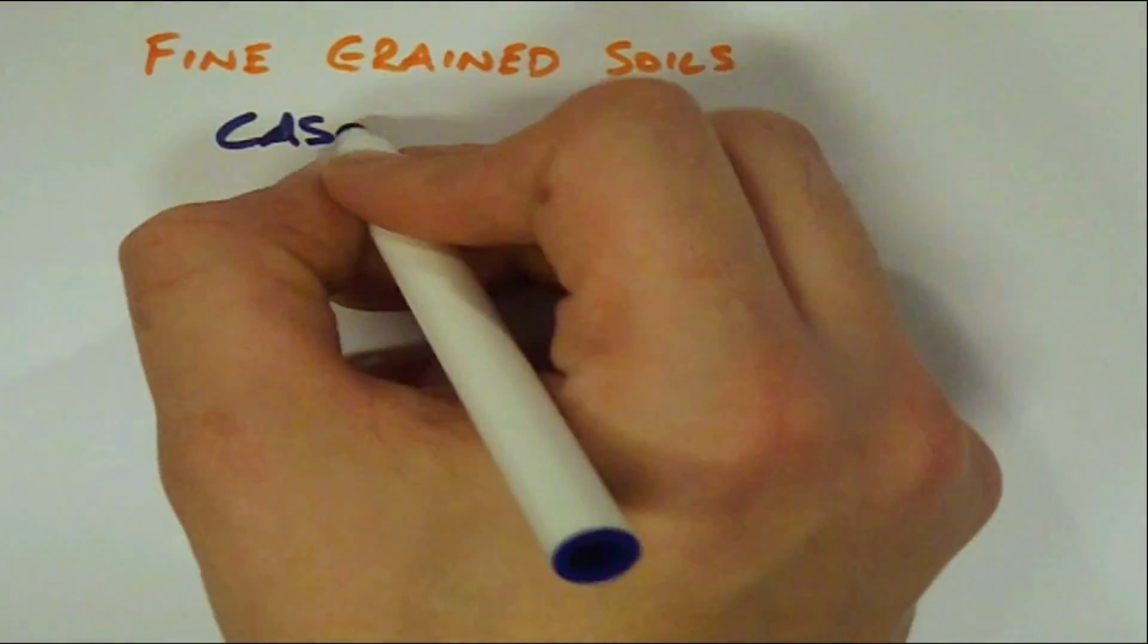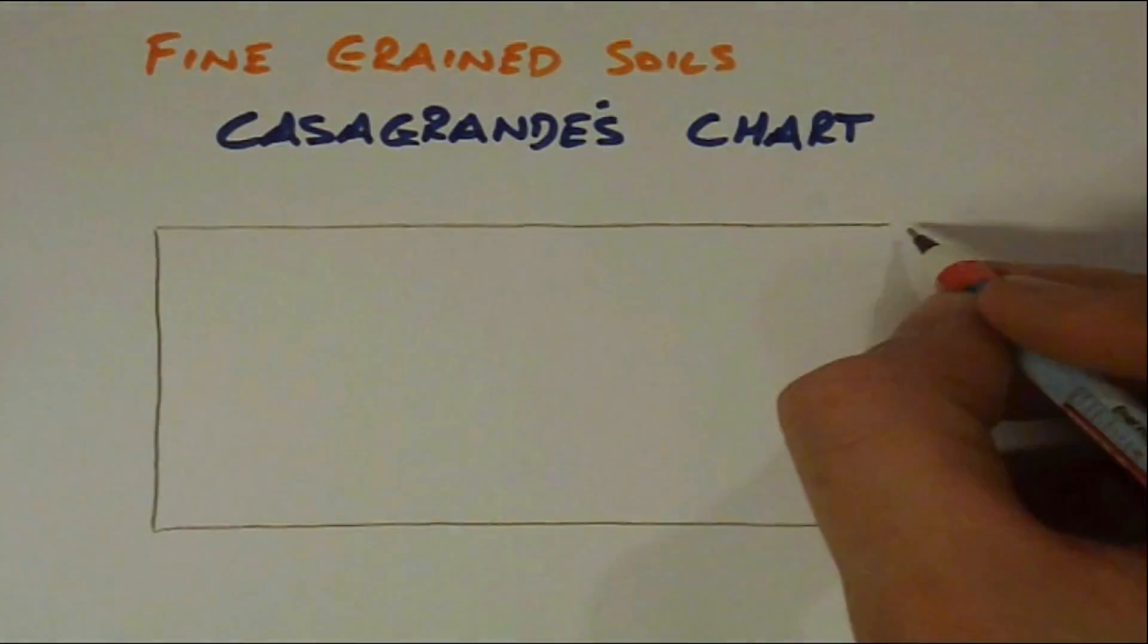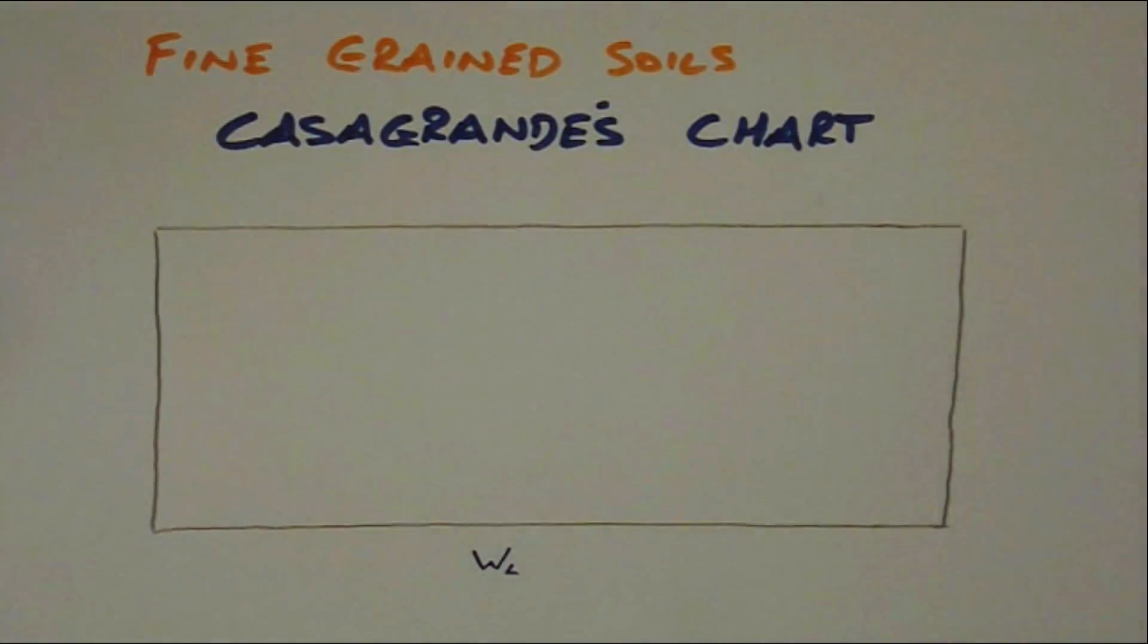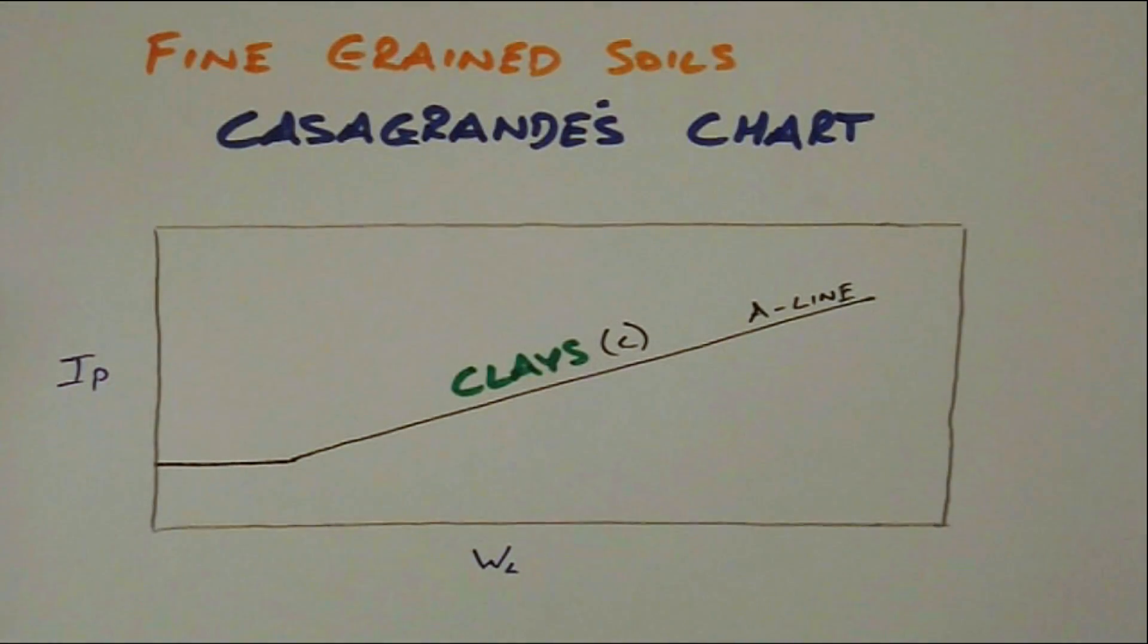If the results plot above the A line, we have a clay designated by the letter C.